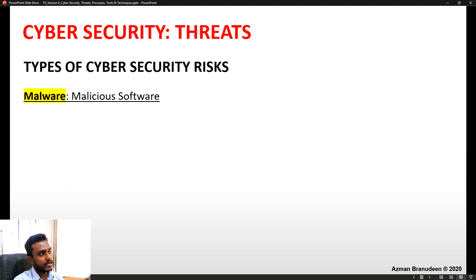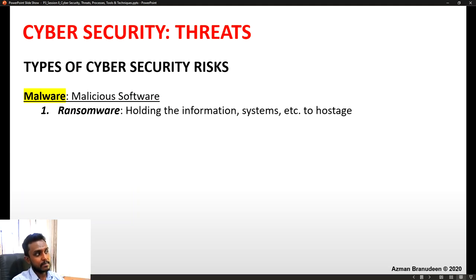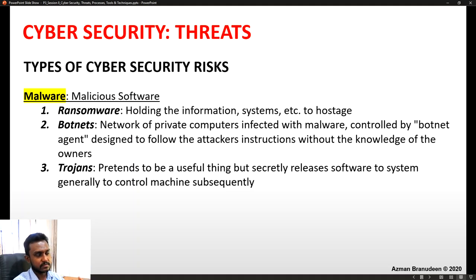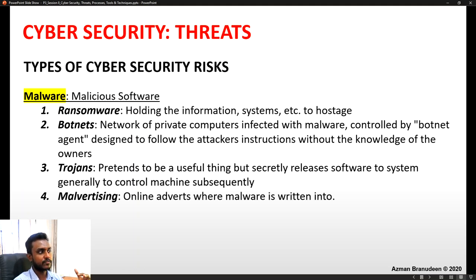To start with, we can look at different types of cyber security risks. You can have malware, which is malicious software. Under malware you can have ransomware, where information is held or systems are locked in order to use them as hostage situations. Botnets are networks of private computers infected with malware and controlled by a botnet agent, designed to follow the attacker's instructions without the knowledge of the owners. Then you may have trojans, which pretend to be a useful thing but secretly release software to a system, generally to control machines subsequently.